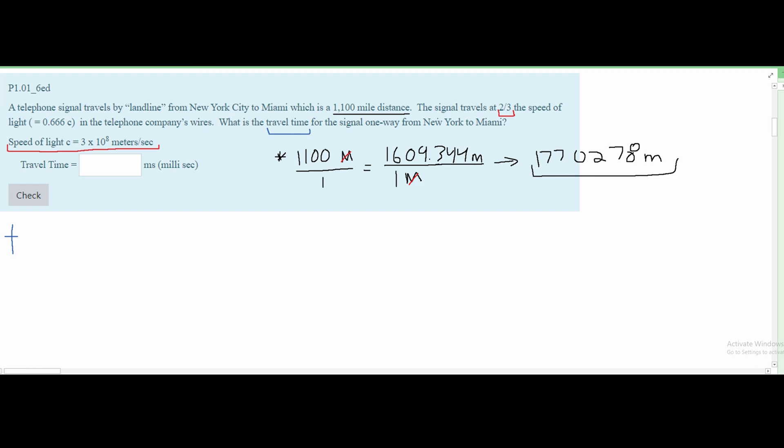Now we have to figure out our signal speed. We have the speed of light, which is 3 × 10^8 meters per second, and we are taking two-thirds of this. We can notice that we have a 3 on top and 3 on bottom, so we can cancel out these 3s. We are just going to be left with 2 × 10^8 meters per second.